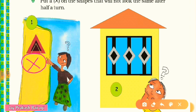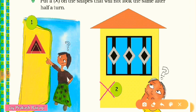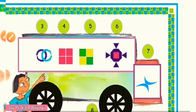Come to the second picture — a house with windows. In one fourth turn it will look like this — not the same, so no tick. In half turn it will look like this — also not the same. So for picture two you also put a cross. Pictures one and two both get a cross.